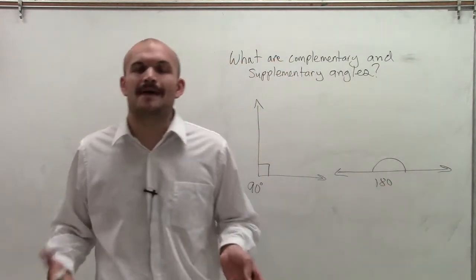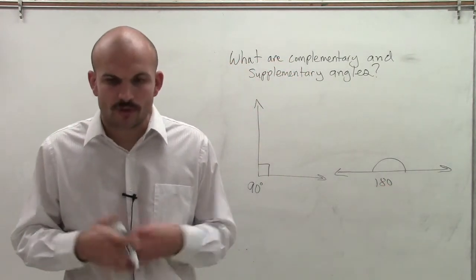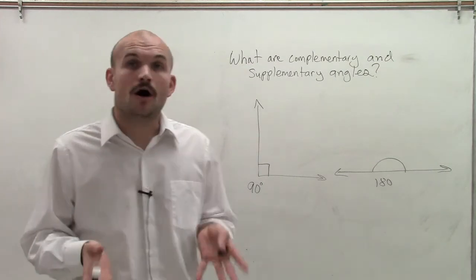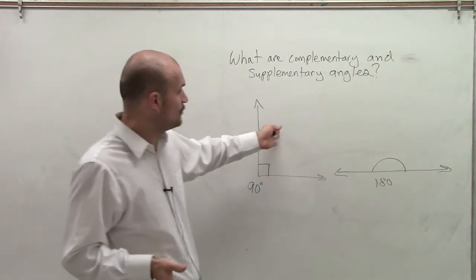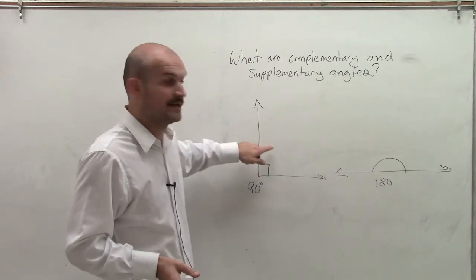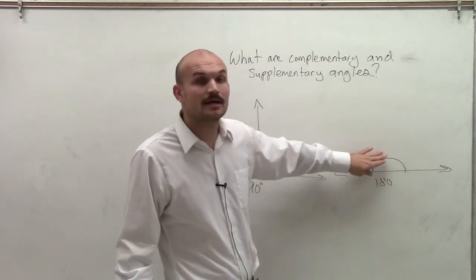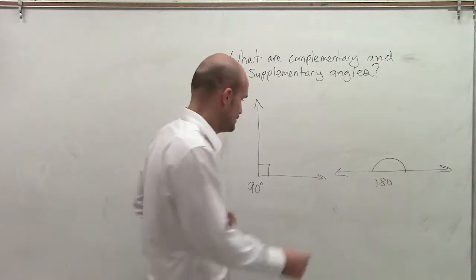So when we're talking about complementary and supplementary angles, the true definition is two angles that add up to either give you a right angle, which would be complementary, and a straight angle, which would be supplementary.